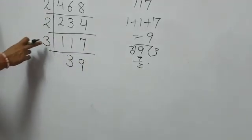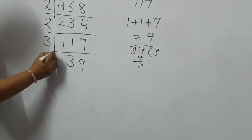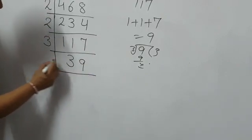117 divided by 3 becomes 39. Now 39 is also divisible by 3.